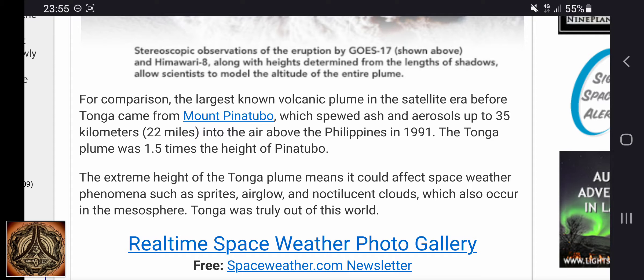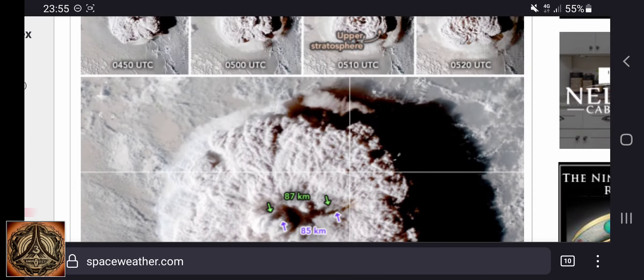The extreme height of the Tonga plume means it could affect space weather phenomena such as sprites, airglow, and noctilucent clouds, which also occur in the mesosphere. Tonga was truly out of this world.